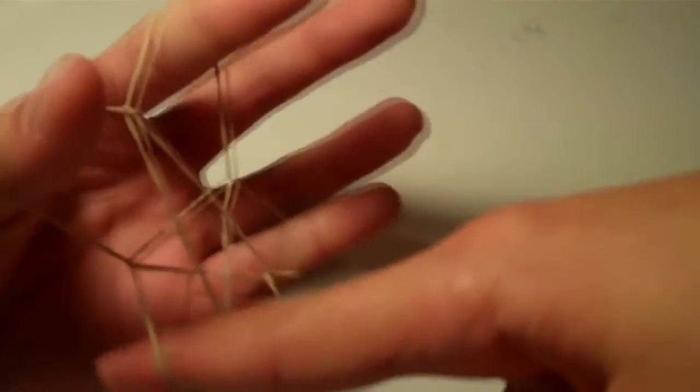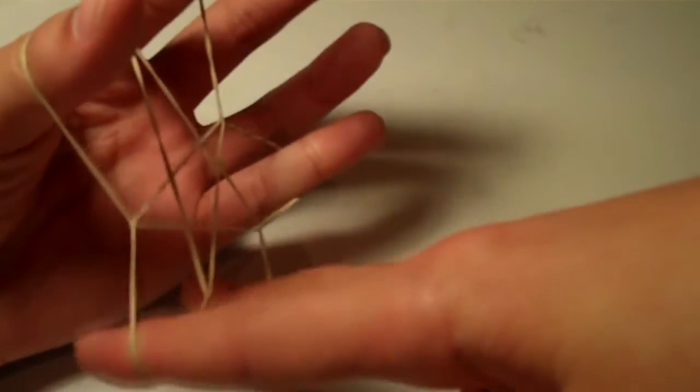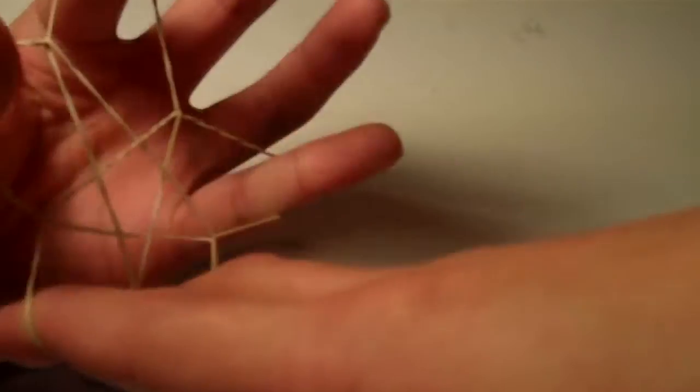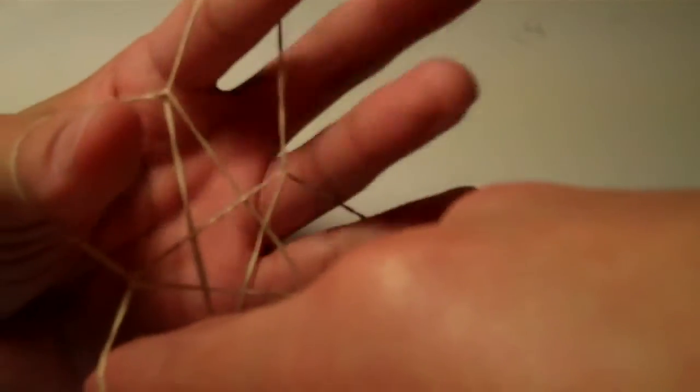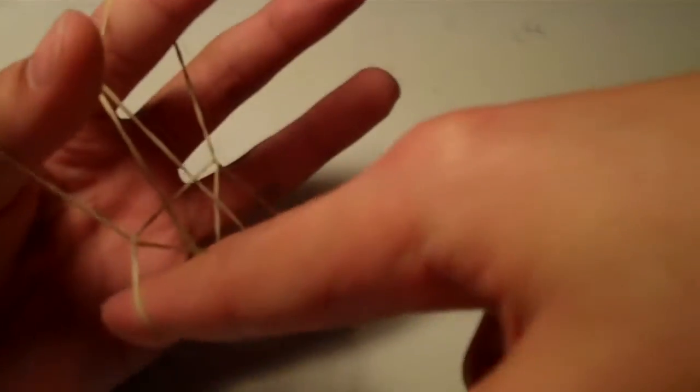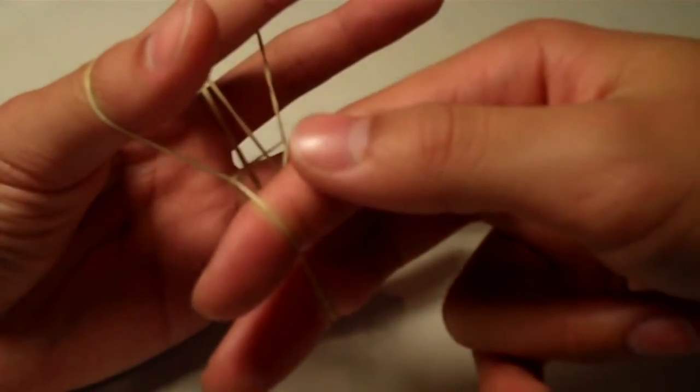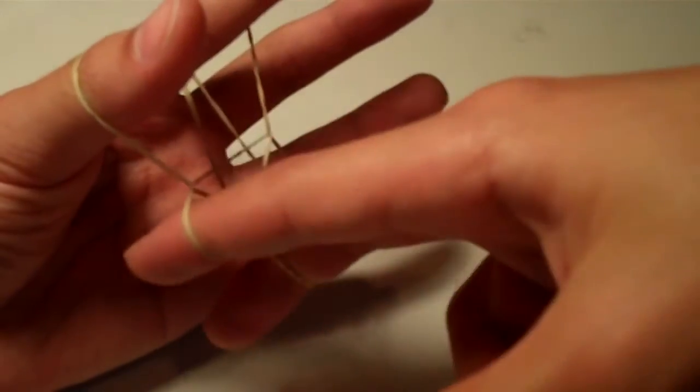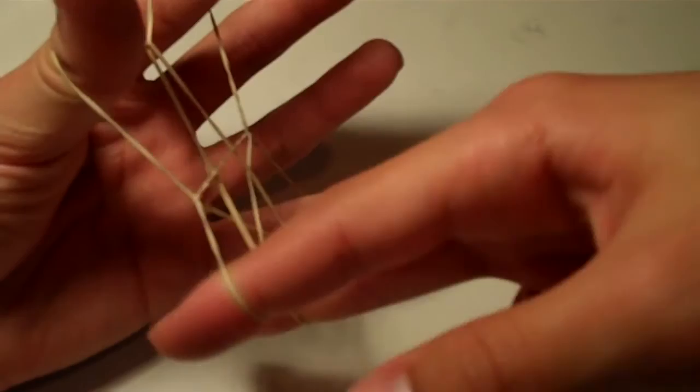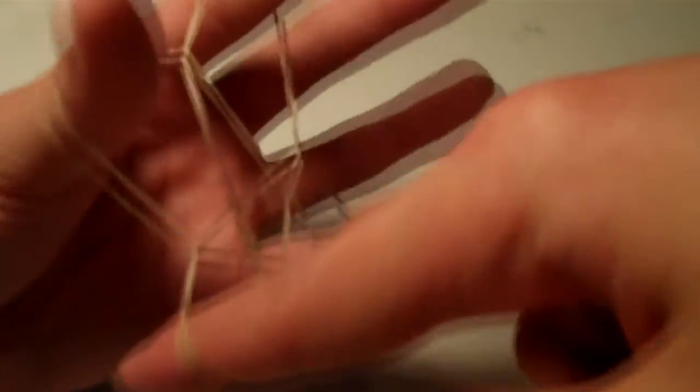And now for the triple star. So once you have the double star, the bottom two legs of the star should be, if the star is actually on your left hand and you're using your right hand in order to make the stars, you want your index finger and your middle finger of your right hand in the two legs of the star.